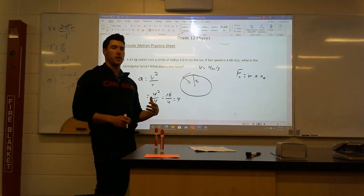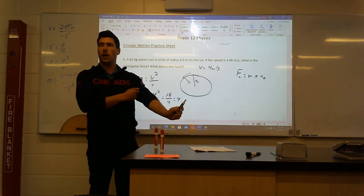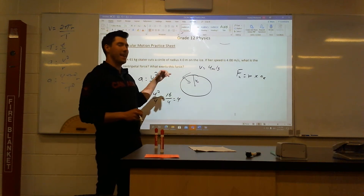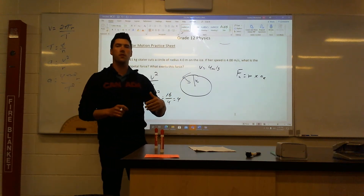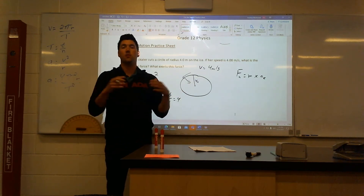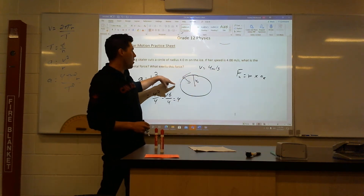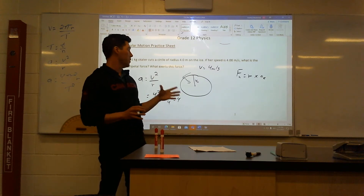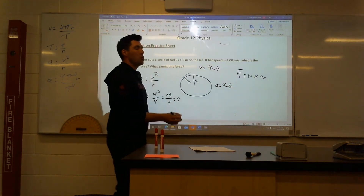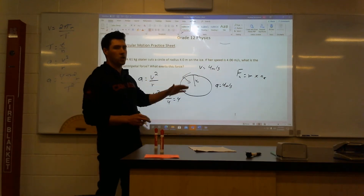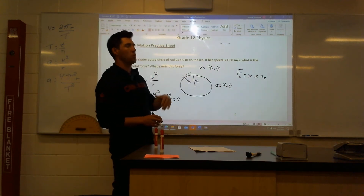So my centripetal acceleration is four. Even though this skater has the exact same speed all the way around, they have an acceleration of four meters per second squared inwards to keep themselves on this circular path. I know that even though they have the same speed, you might think acceleration is zero. But because they're consistently changing direction, we have to have an acceleration towards the middle. Otherwise, they just keep going straight. The direction is always in towards the middle of the circle.